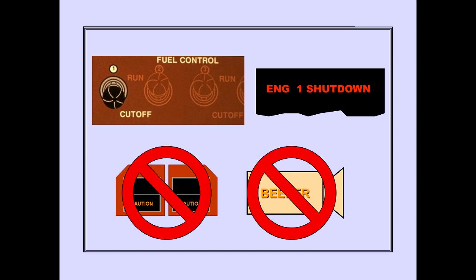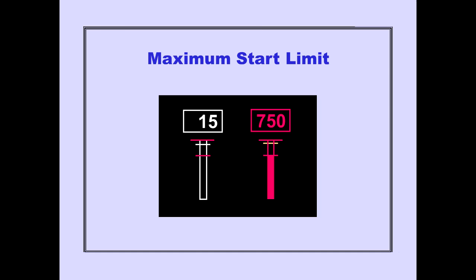The associated caution lights and aural tone are inhibited with this message. With the fuel control switch in cutoff, the maximum start limit is displayed as a red line on the EGT indication.